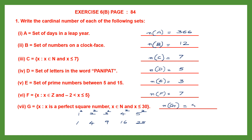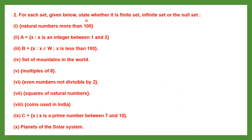Now Question 2: for each set given below, state whether it is a finite set, infinite set, or null set. A finite set is one in which you can count the elements. An infinite set has so many elements you cannot count them — they go on endlessly. A null set is a set with no elements at all; it is empty.